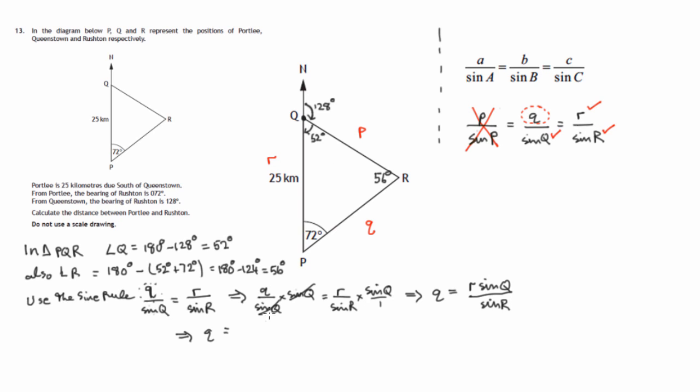So let's substitute now values that we know because we do know the three quantities on the right. We know little r is 25. We know that angle Q is 52 degrees. And we know that angle R is 56 degrees. So that's the calculation we've now got to do.